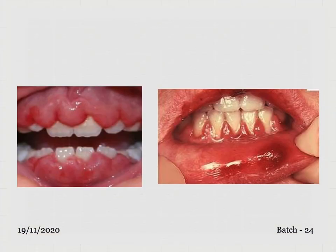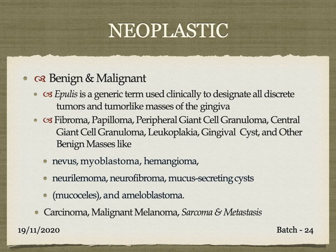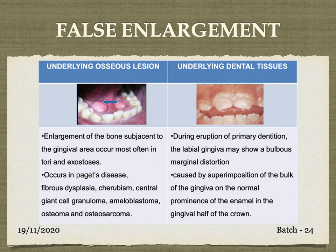Next is neoplastic type of gingival enlargement — also independent of inflammatory response to the local site. It may be benign or malignant tumors. An example of benign is epulis, a generic term for a discrete tumor or tumor-like mass of the gingiva. Examples include fibroma, papilloma, peripheral giant cell granuloma, central giant cell granuloma, leukoplakia, gingival cyst, and other benign masses. Malignant tumors such as carcinomas, malignant melanoma, sarcoma, and metastasis in the gingiva result in neoplastic gingival enlargement.